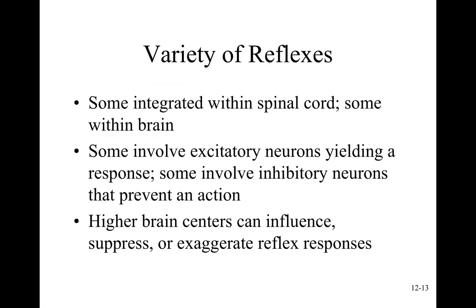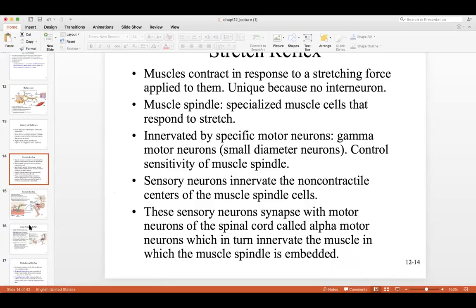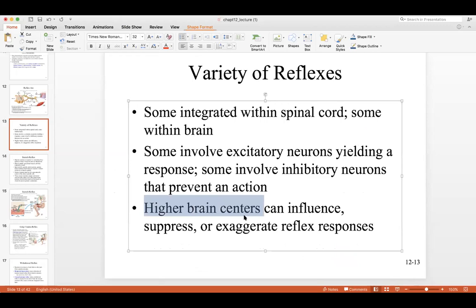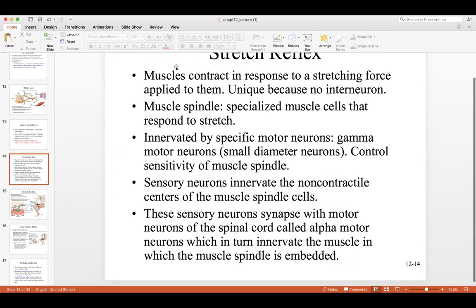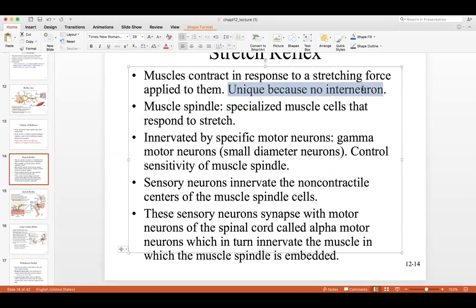Reflexes can be integrated within the spinal cord or the brain. Some use excitatory neurons, some inhibitory. They range from simple to complex, and brain centers can influence, suppress, or exaggerate a reflex response. The stretch reflex is unique because it has no interneuron — muscles contract directly in response to a stretching force.